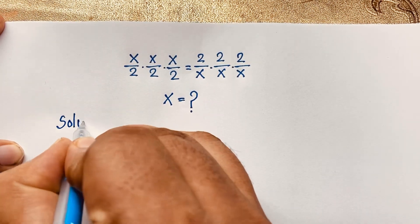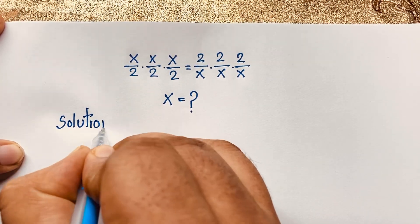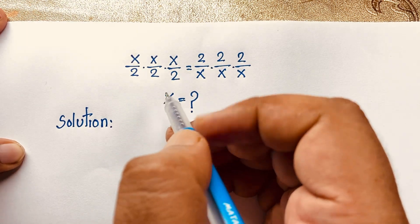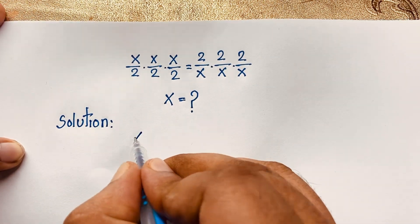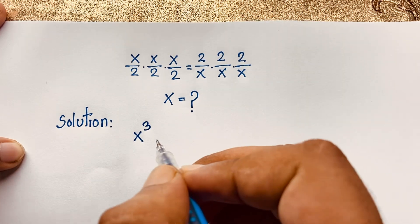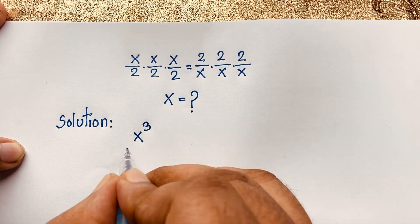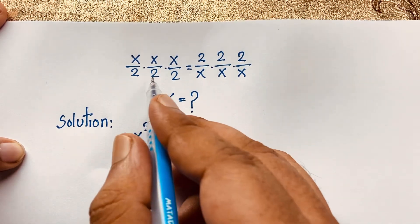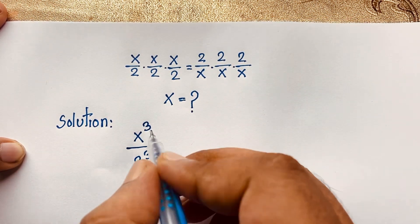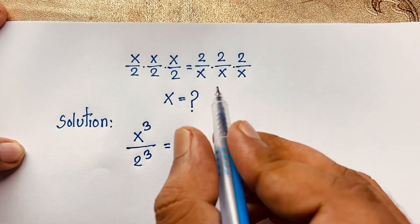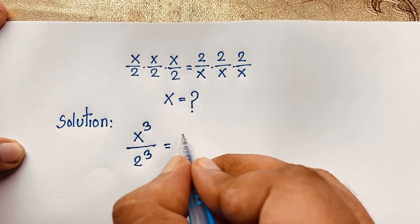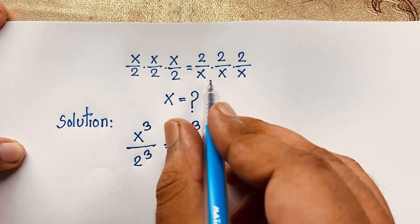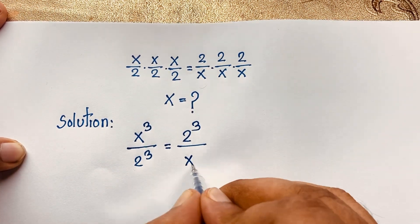For our math solution, on the left side: x × x × x gives us x to the power 3, and 2 × 2 × 2 gives us 2 to the power 3, which equals 8. So the left side simplifies to x³/8. On the right side, 2 × 2 × 2 is 2³ over x × x × x, which is x³.